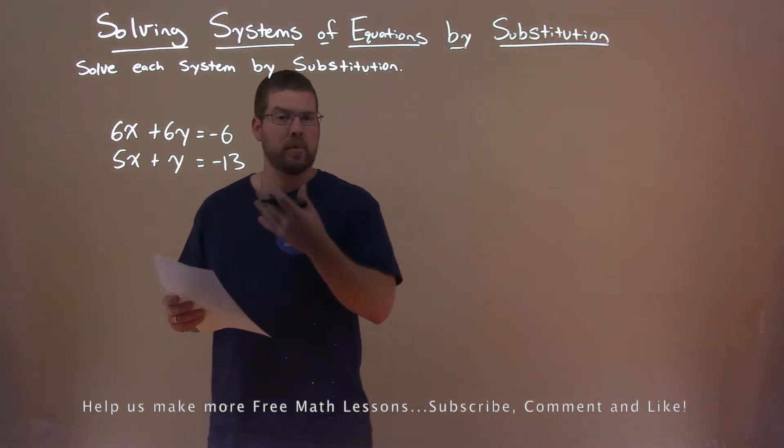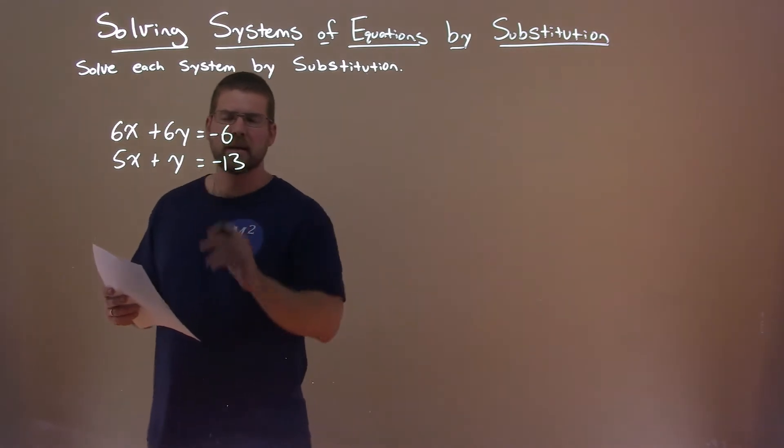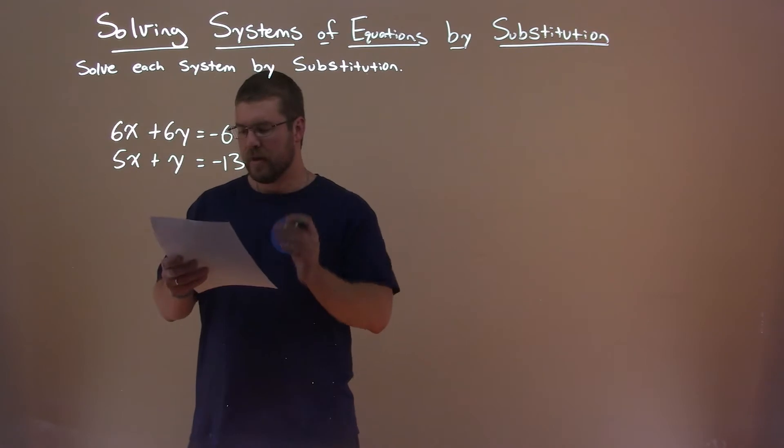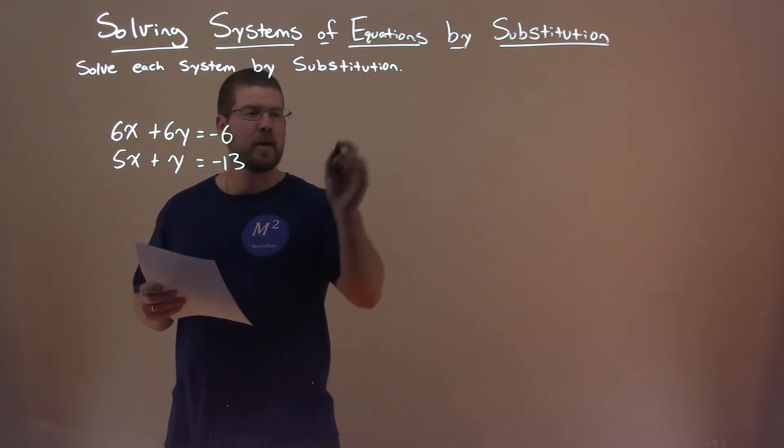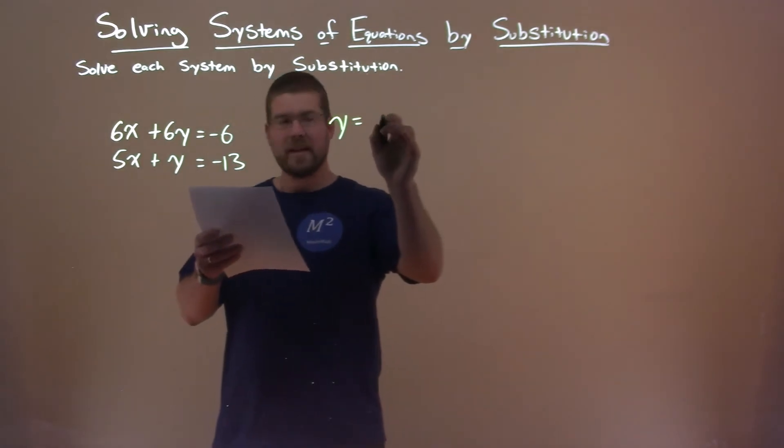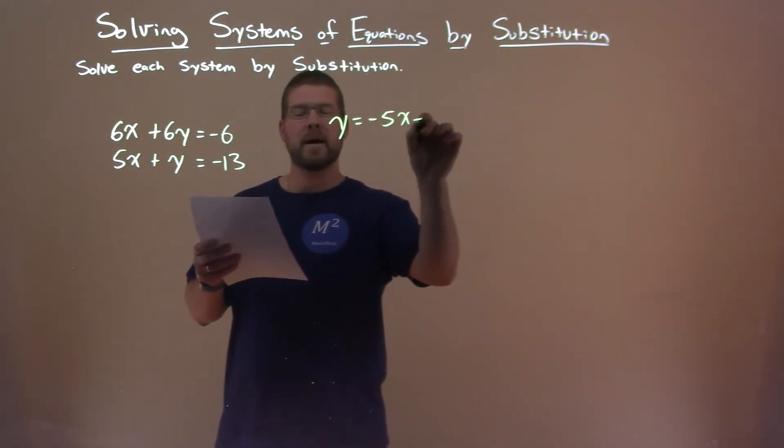I want to get a variable by itself, and I see the second equation is the easiest way to do that. All I have to do is subtract 5x to both sides, and y is completely by itself. So we do that, and subtract 5x, and we get y equals negative 5x minus 13.